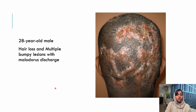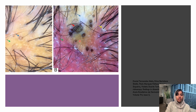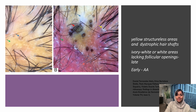The next scenario: a 28-year-old male with complaints of hair loss and multiple bumpy lesions with malodorous discharge. On trichoscopy, there are yellow dots, white fibrotic areas, perifollicular scaling, and background erythema. These are classical features for dissecting cellulitis of the scalp — yellow structureless areas, dystrophic hair shafts, and white areas lacking follicular openings. This is a type of cicatricial alopecia; in early phases, it can even show features of alopecia areata.